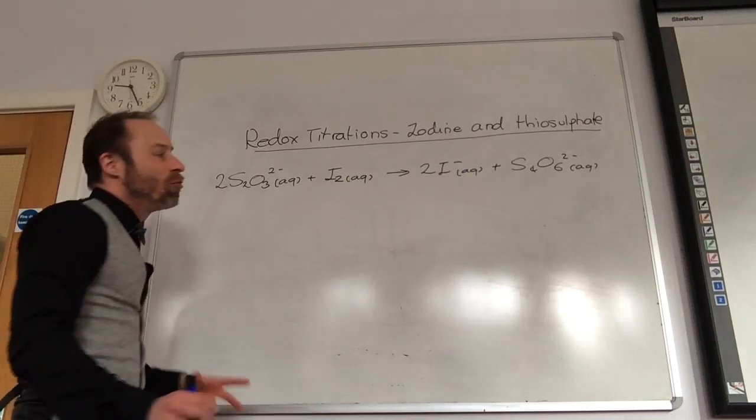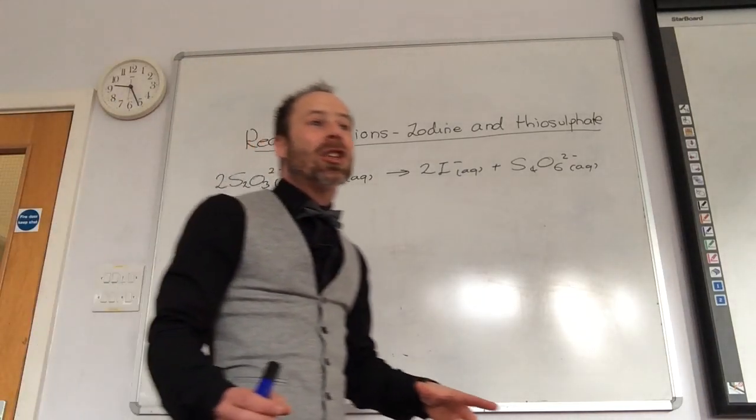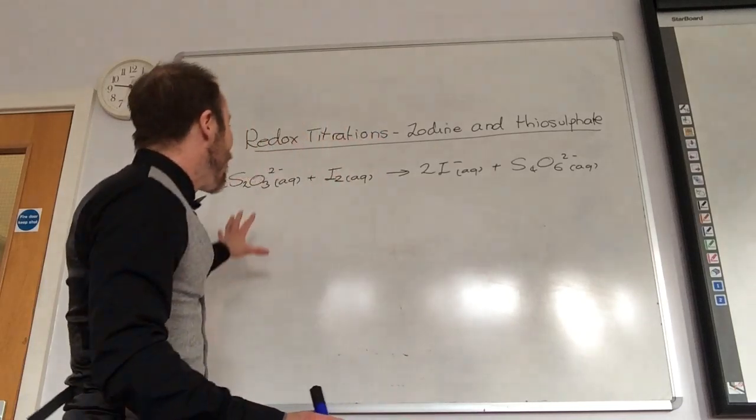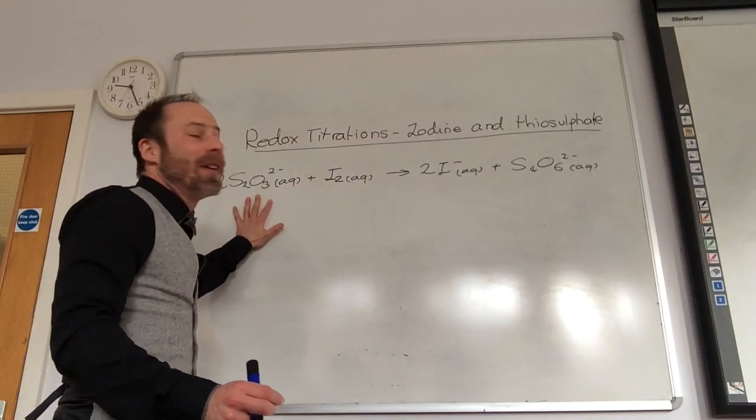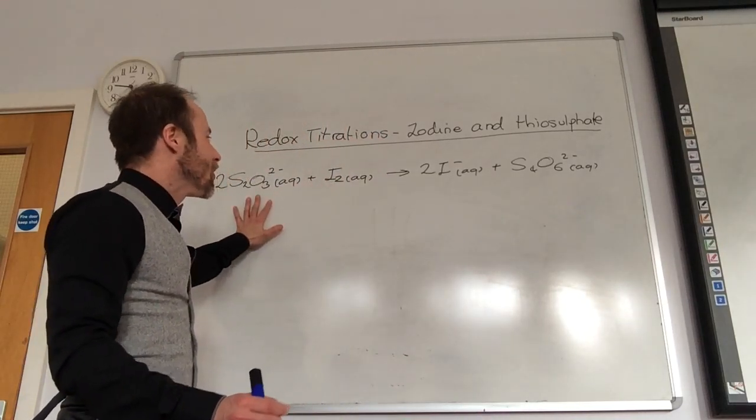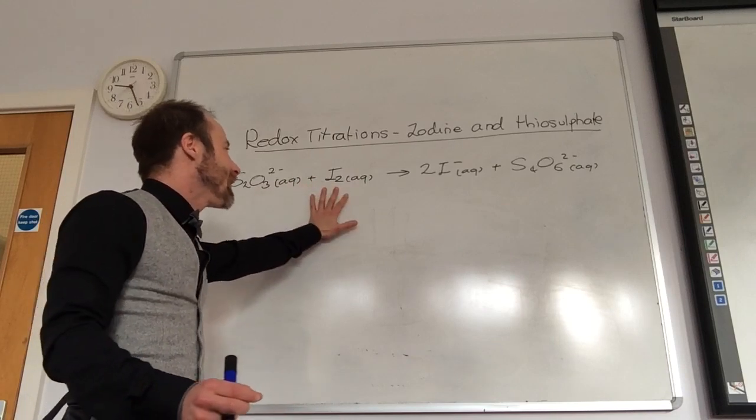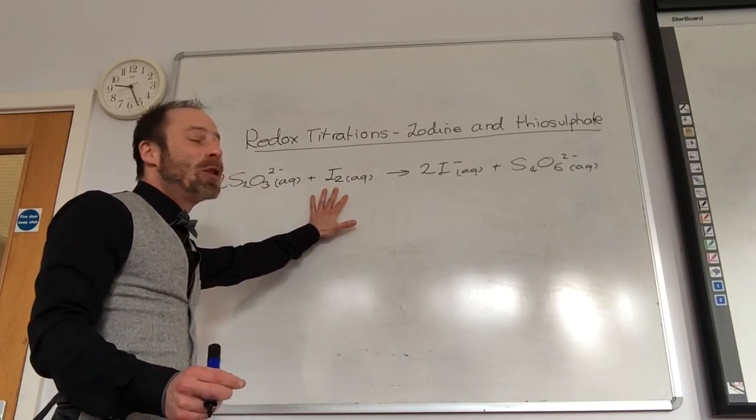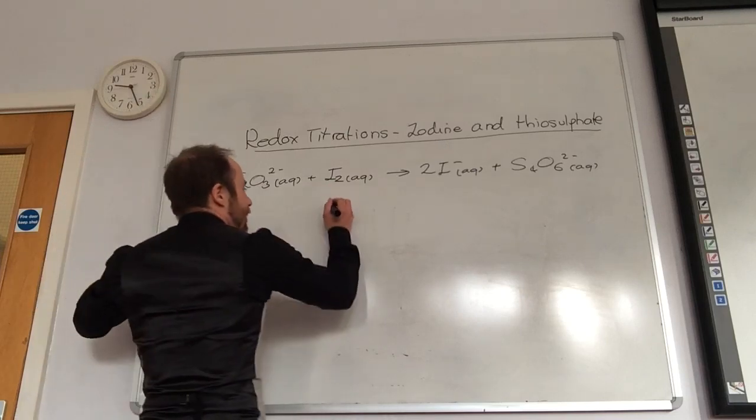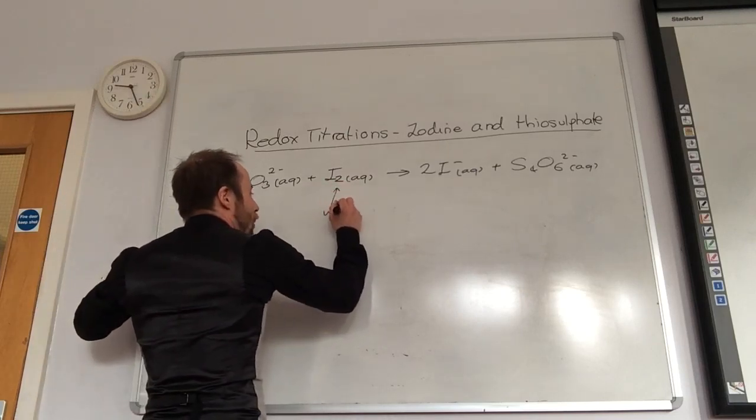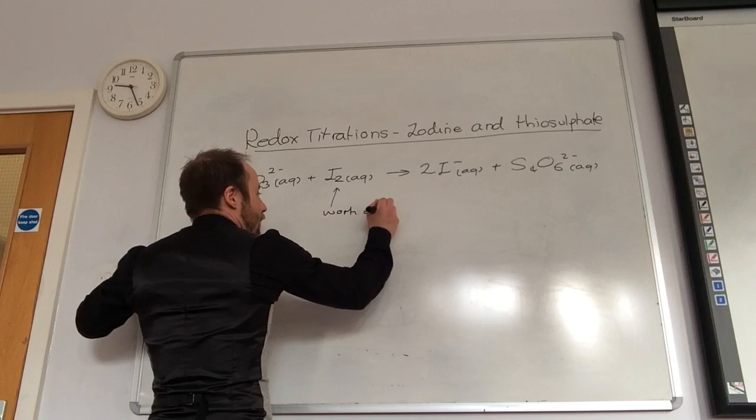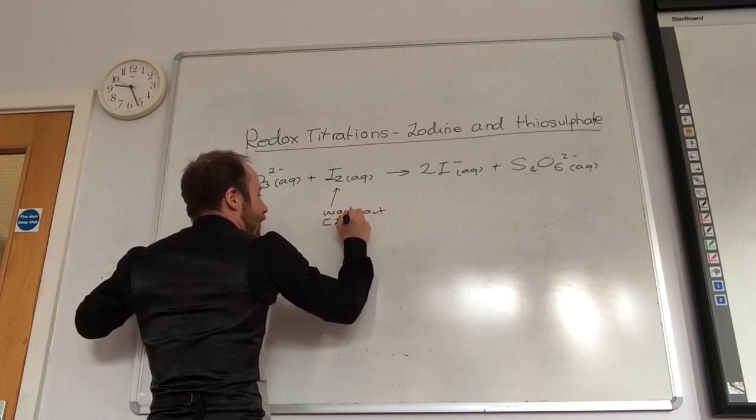This is our final type of redox titration that we need to learn about. This is an iodine thiosulfate titration. Doing this titration will allow me to work out the concentration of I2.